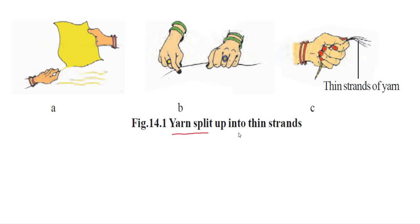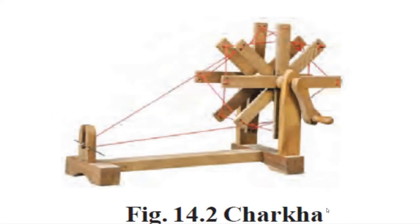First, you can see here that yarn is split up into thin strands - that means a thin strand of yarn is shown here. The second one is a charkha, which is used to make yarn.